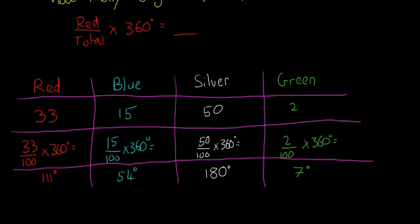Then the next column was blue, so blue we have 15 cars, 15 divided by 100 multiplied by 360 will be 54 degrees. Silver 50, 50 over 100 gives us 180 degrees, and then lastly green with 2 cars will have 7 degrees of the pie.